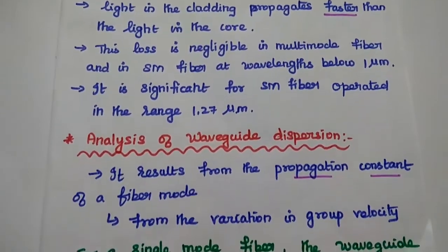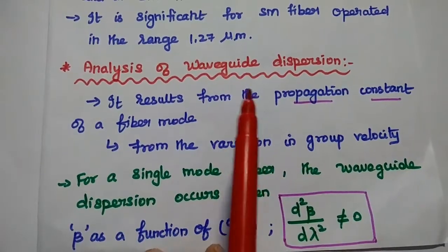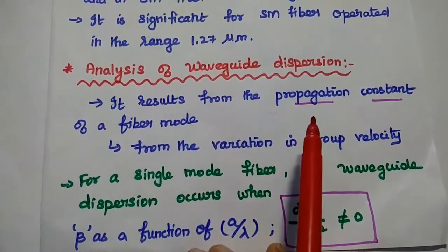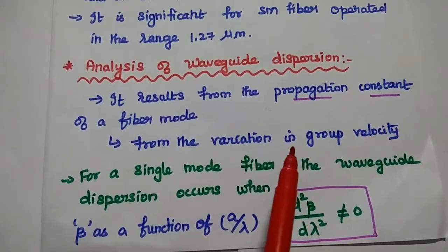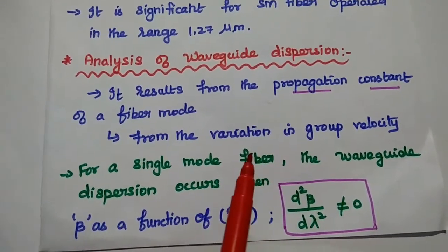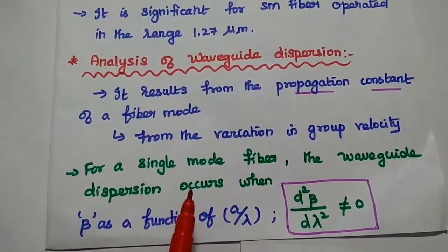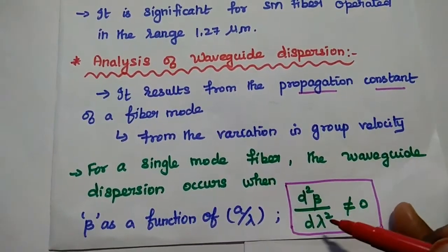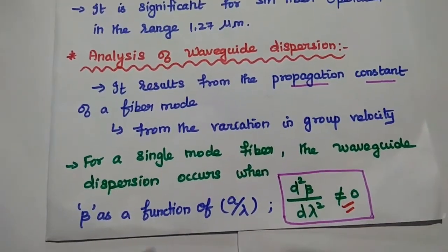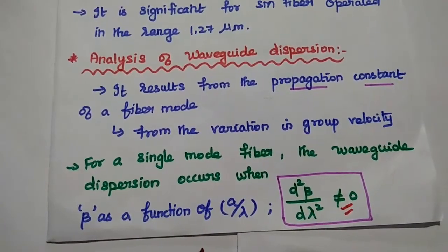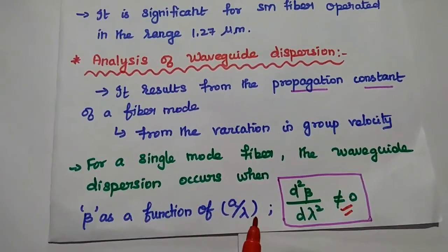Next, we are going to derive the loss due to waveguide dispersion. Waveguide dispersion results from the propagation constant of a fiber mode as well as from the variation in the group velocity. For a single-mode fiber, waveguide dispersion occurs when d²β/dλ² is not equal to zero, with the condition that beta is a function of lambda over a, where a is the radius of the core.